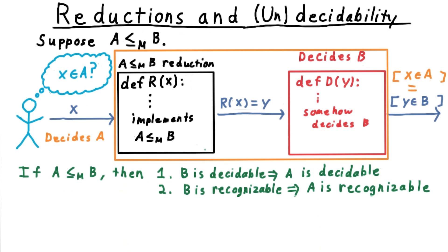This same logic also works if there's only a recognizer for B. If we input a string X that is in A, then R of X will be in B, so the recognizer will accept. And if we input a string that is not in A, then R of X will not be in B, so the recognizer will not accept.